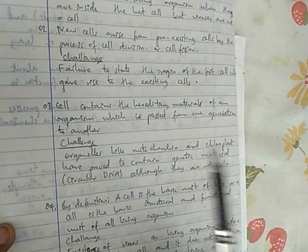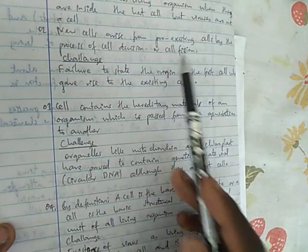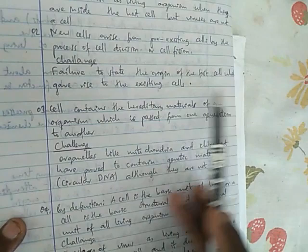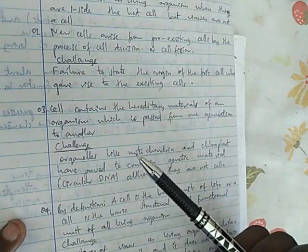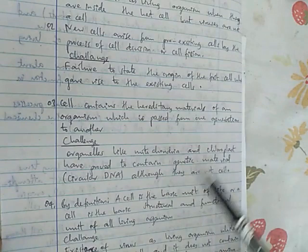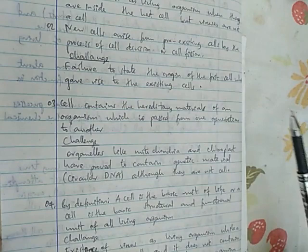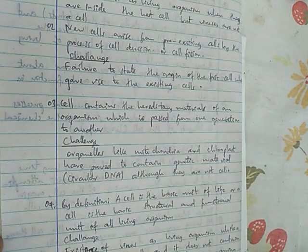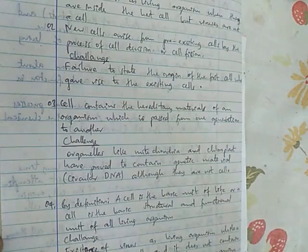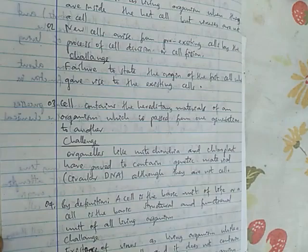The second challenge. New cells arise from pre-existing cell by the process of cell division or cell fission. So the challenge of this is that failure to state the origin of the first cell, which gave rise to the existence. It's true that now we know that new cells come from old cells by mitosis. But we don't know where the first cell came from. And even the ideas of evolution, they have just discussed different things, but they failed. That's why there is the spontaneous generation theory of organic evolution, which says that living organisms were made by supernatural power.